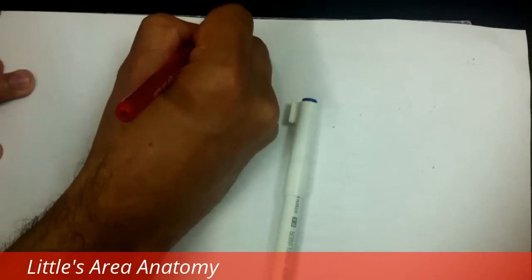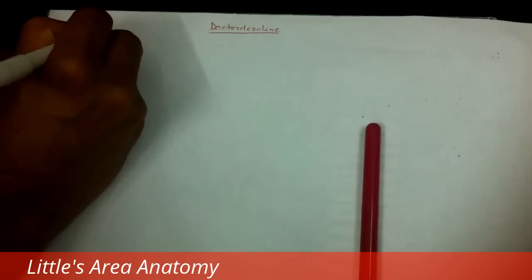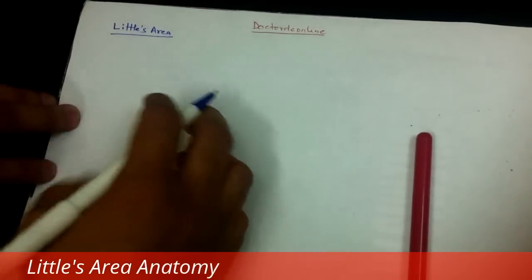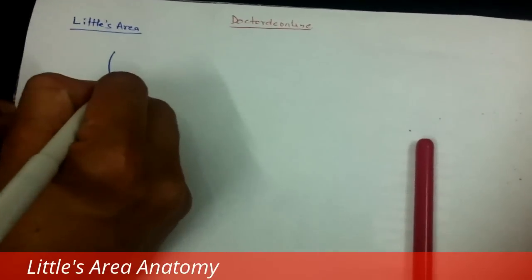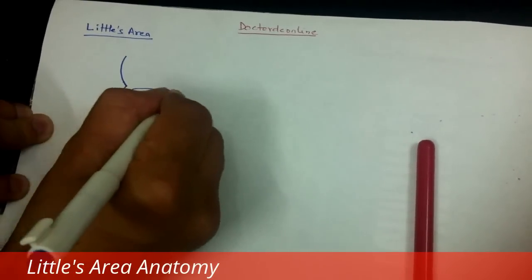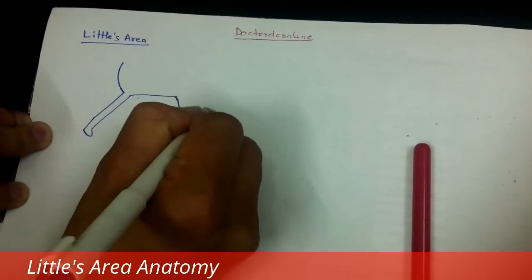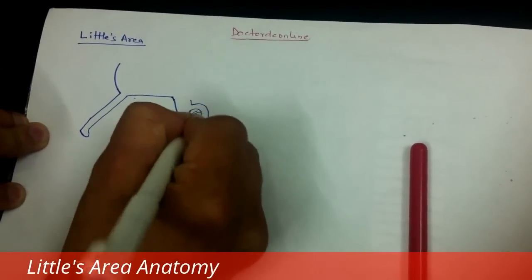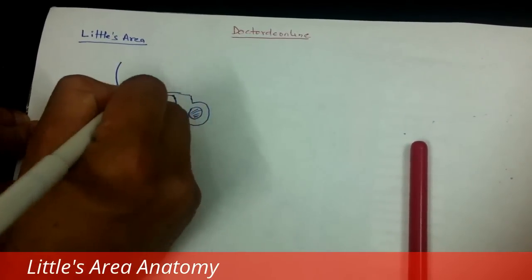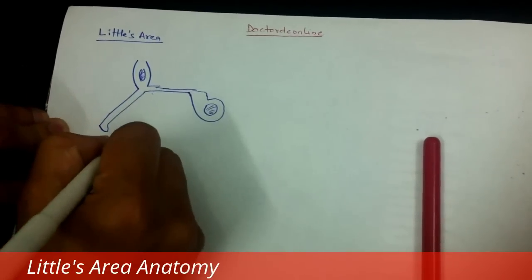Today we are talking about the anatomy and structure of Little's area. First, let's make a diagram. This is the nasal septum, there is an ethmoidal bone, ethmoidal sinus space, this is a sphenoid sinus, here is a frontal sinus.